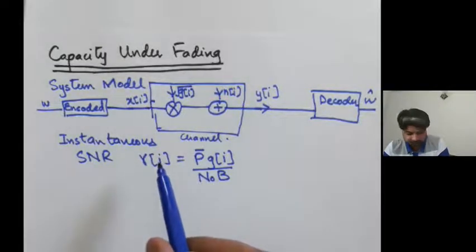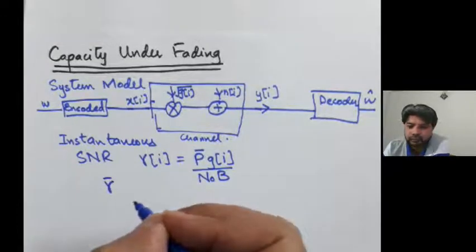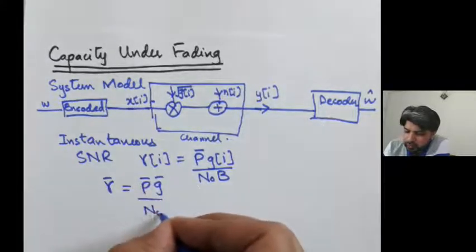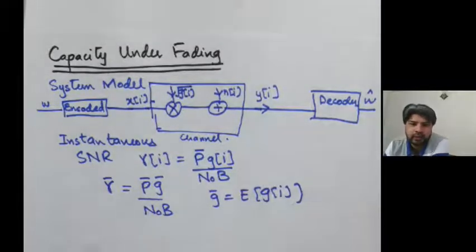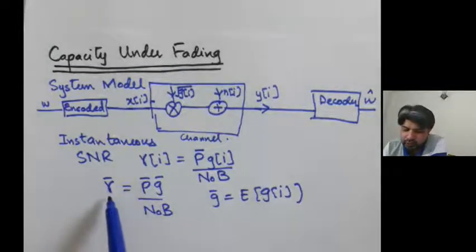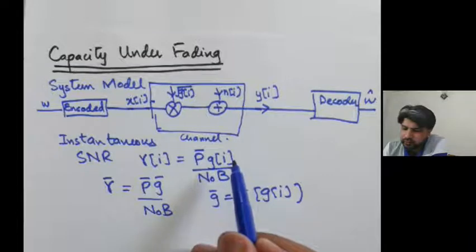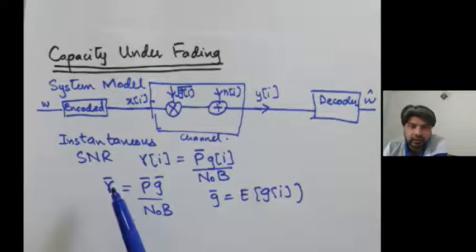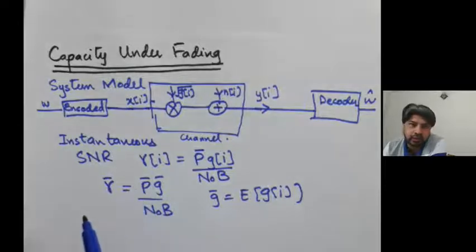Given that definition, gamma-bar, the average SNR, equals P-bar times g-bar over N0, where g-bar is the expected value of g(i). That is your average signal-to-noise ratio. The question to keep in mind is: given gamma(i) and gamma-bar, can you compute what is the AWGN capacity and what would be the ergodic capacity? Let's think about how to compute the AWGN capacity and the ergodic capacity with this information.